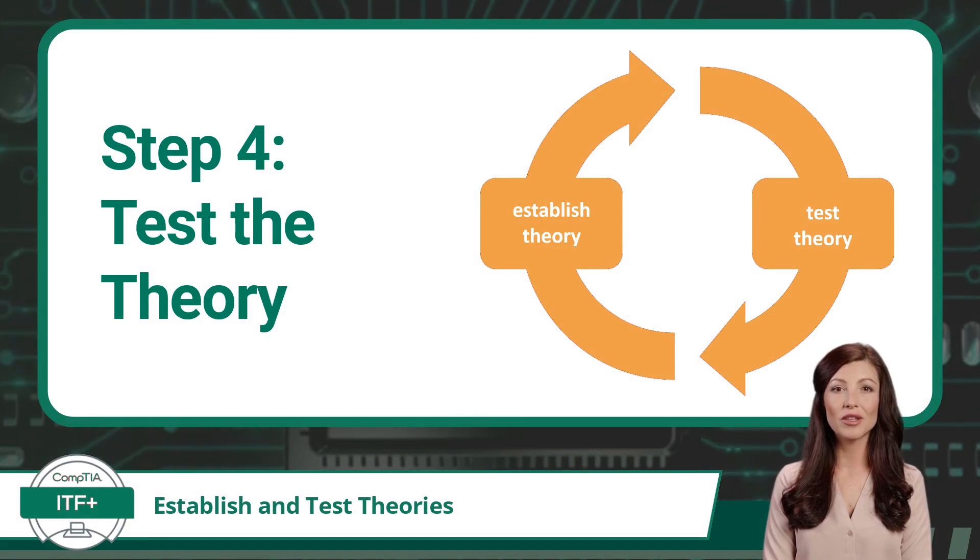Step 4 in CompTIA's Troubleshooting Process is to test the theory to determine the cause. Coming up with a theory was a great start, but now you need to test it. While testing is the logical step after establishing a theory, we need to remember these two steps are an iterative process and we might need to repeat them a number of times.